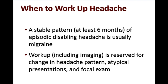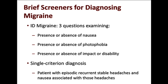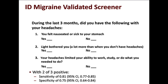You can be pretty confident that somebody has recurrent migraine. There are a few brief screeners for diagnosing migraine in addition to the ICHD criteria. One is a three-item questionnaire, the ID migraine screener, developed by Richard Lipton and colleagues. It asks about presence or absence of nausea, photophobia, and impact or disability. With two of those three positive, the sensitivity is 0.81 and specificity is 0.75 for a migraine diagnosis.